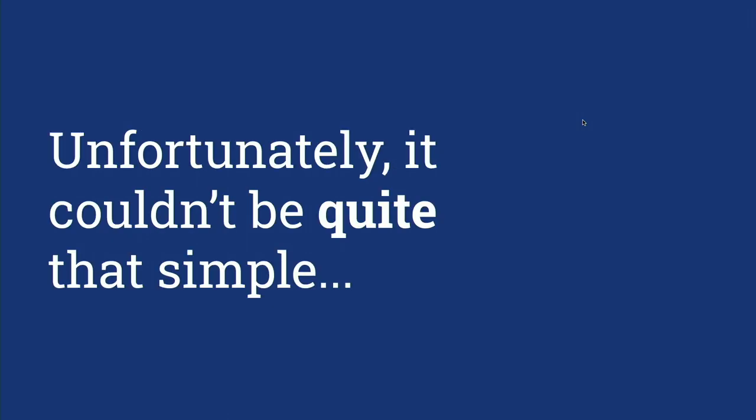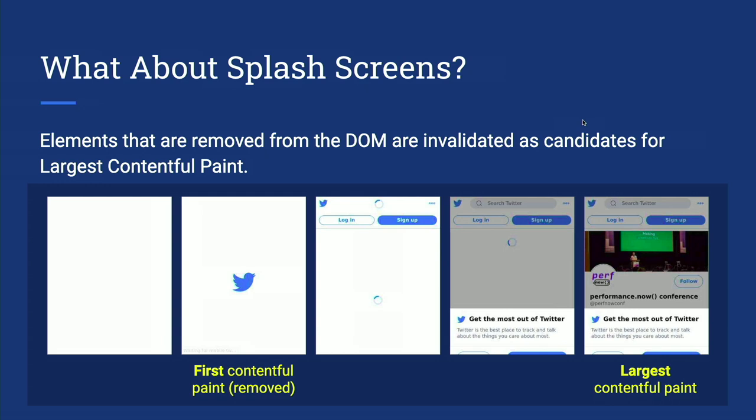But actually it wasn't quite that simple — there were some edge cases to handle. The first one is splash screens. This is a film strip of Twitter loading: you can see their logo and a loading spinner, and then finally we get the main text of the page. We realized that if we invalidated the logo and spinner as candidates for largest contentful paint when they're removed from the DOM, we actually get largest contentful paint in the right place for this page. Looking at lots of different film strips like this, it worked really well. So we invalidate elements that are removed from the DOM.